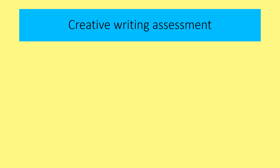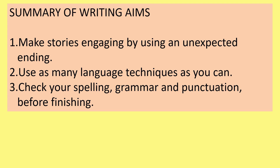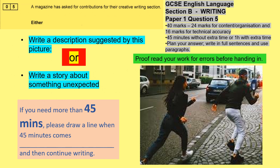Creative writing assessment. Here's a reminder of the writing aims. Number one: make stories engaging by using an unexpected ending. Use as many language techniques as you can. Check your spelling, grammar and punctuation before finishing. Here is the task: you're writing for a creative writing competition and you're to write a description suggested by this picture. You don't have to exactly describe the picture — it's creative. Or write a story about something unexpected, which does not have to be linked to the picture. You should spend 45 minutes to one hour 15 on this task. Please proofread your work for errors before handing in.